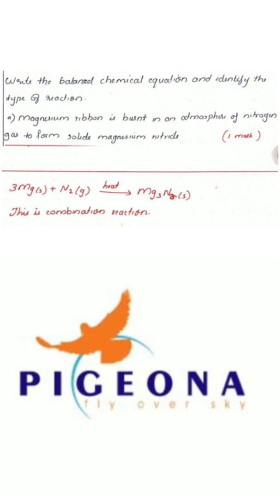Nitrogen is a diatomic molecule, so it is always written as N₂. First, we write Mg + N₂ on the left side. Since magnesium is burnt, we write 'heat' above the reaction arrow.